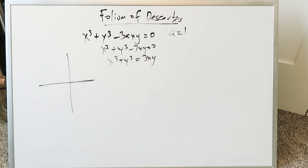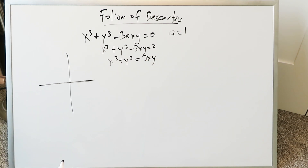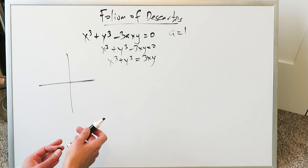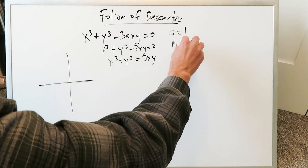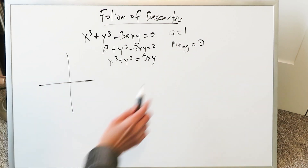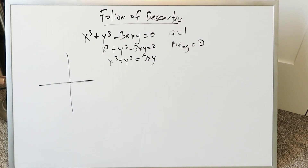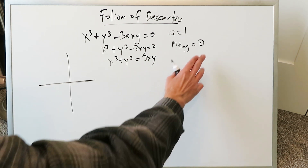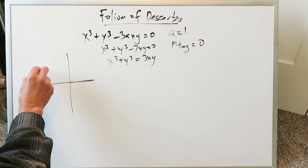Our task in this specific video is to determine, once we've looked at the graph, where on this curve or on this loop we can generate a tangent line with a slope of 0. We're looking for where on that loop in the Folium of Descartes we can generate a horizontal tangent line, because horizontal lines have a slope of 0.